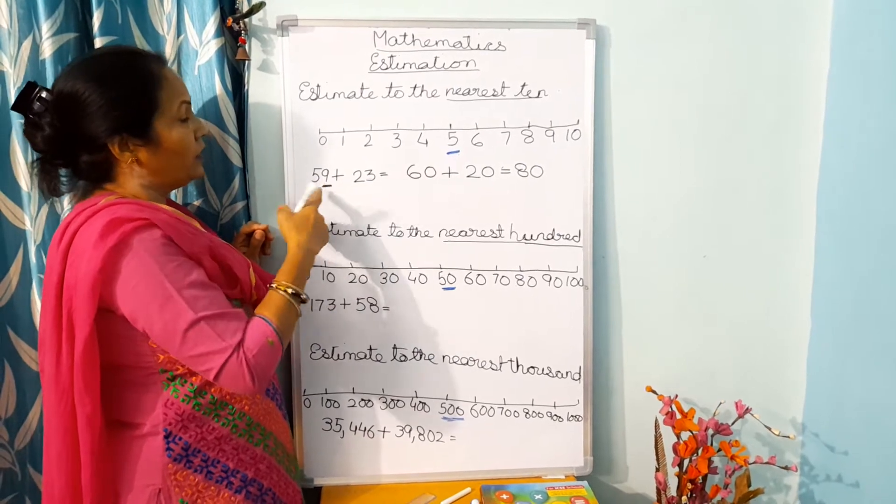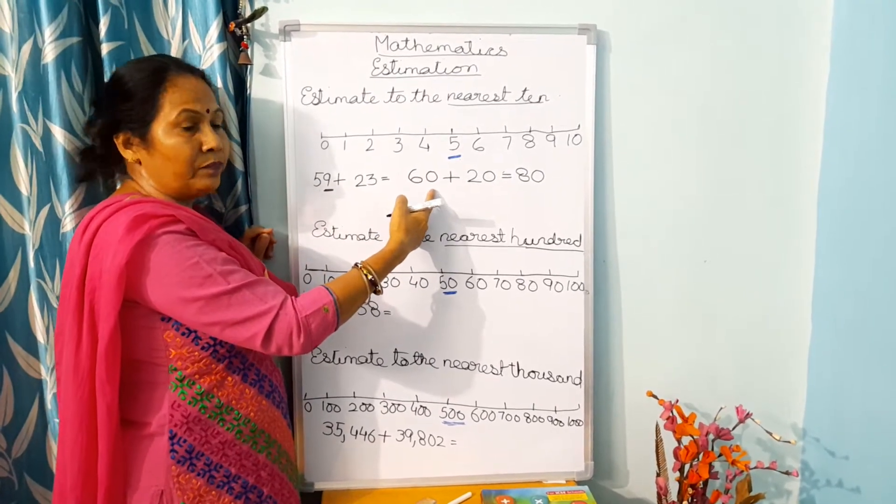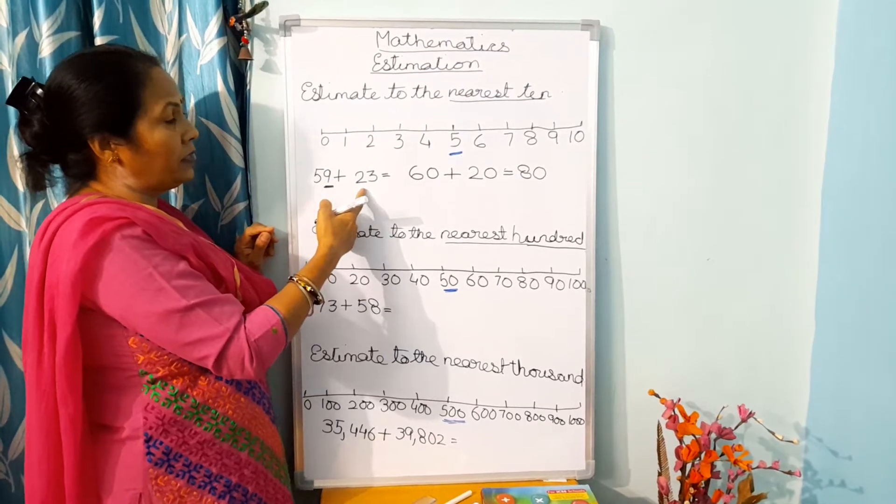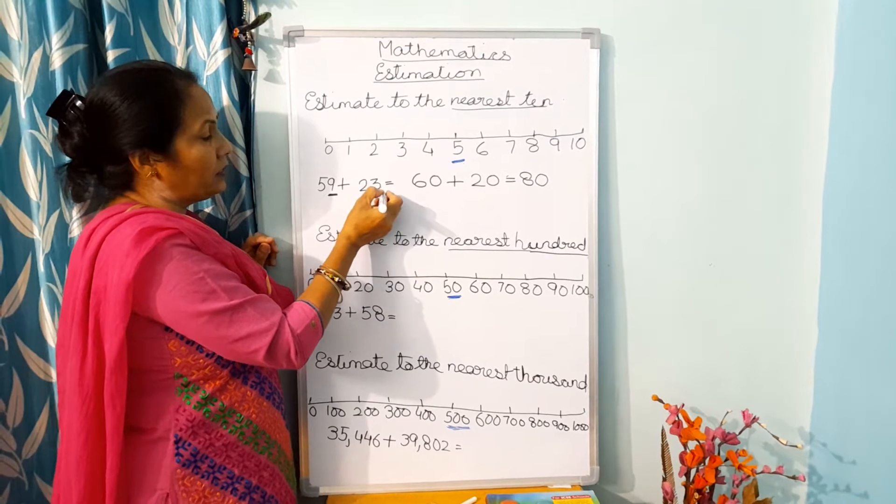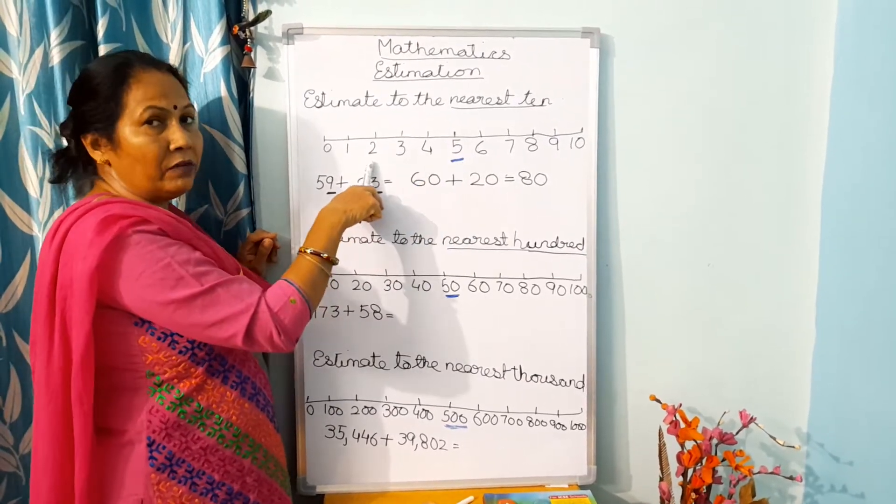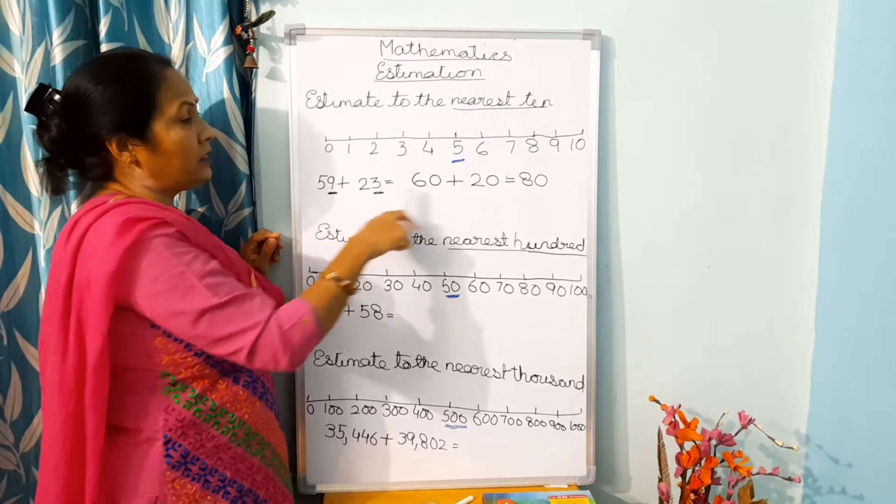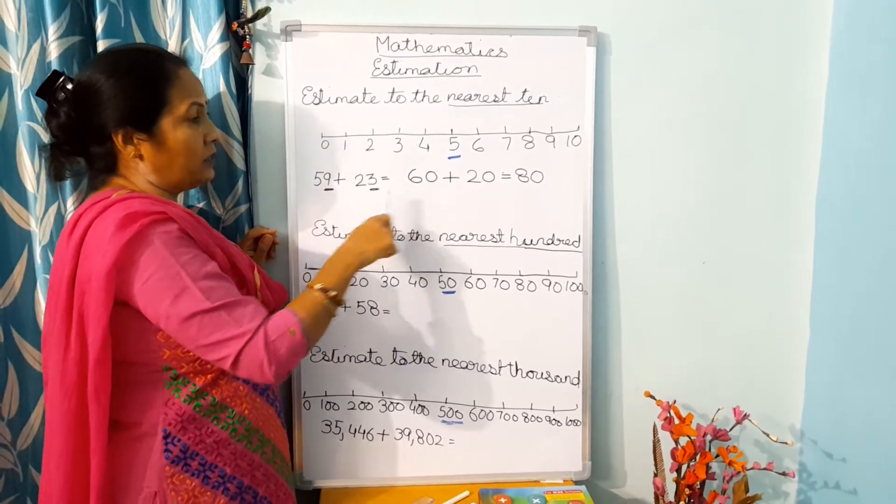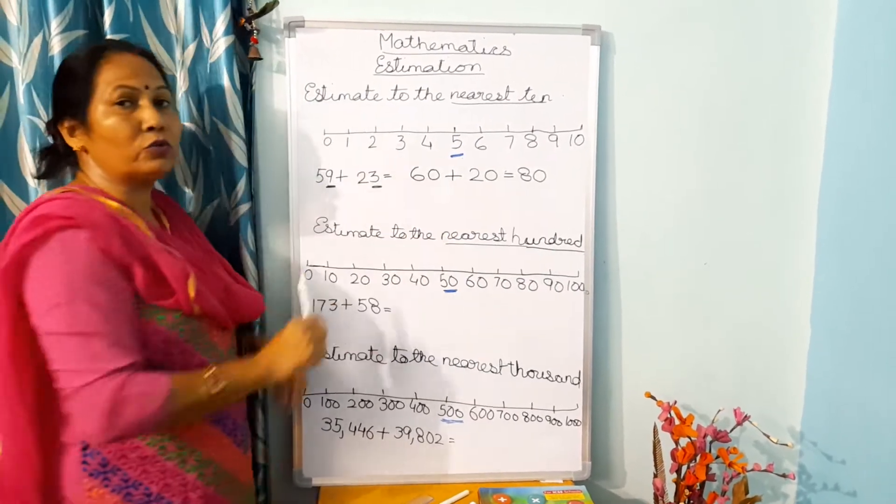Now the next number is plus 23. Now you will take here the 1's number. 3 is less than 5, so you are not going to change this. You will write here 20. And the answer will be 60 plus 20 is equal to 80.